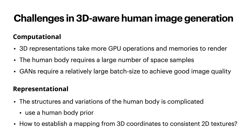On the representational side, the structures and variations of the human body are complicated and hard to encode. A common solution is to use a human body prior that encodes the shape and pose information of the body. However, this raises another question: how to establish a mapping from 3D coordinates to 2D textures that can preserve the appearance and consistency of the body image.